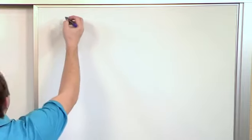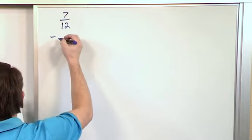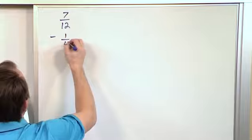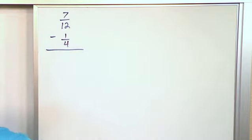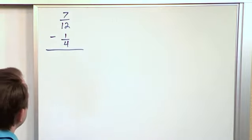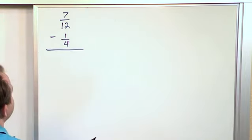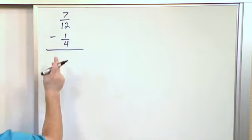Now what if we have 7 twelfths and I'm subtracting from that 1 fourth? So I have a 12 up here and I have a 4 down there. Those are clearly not common denominators.